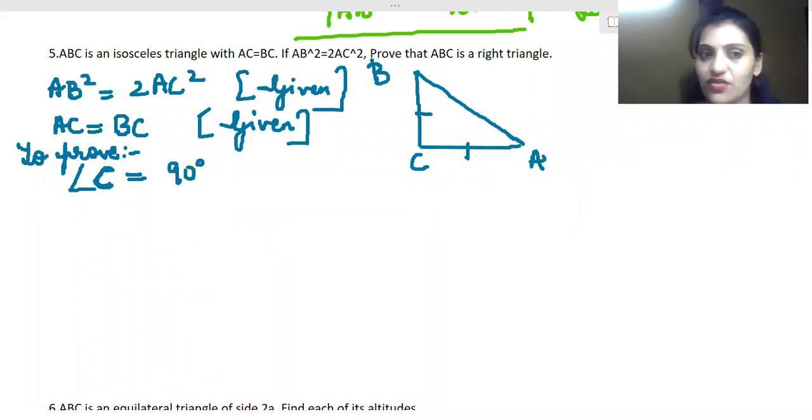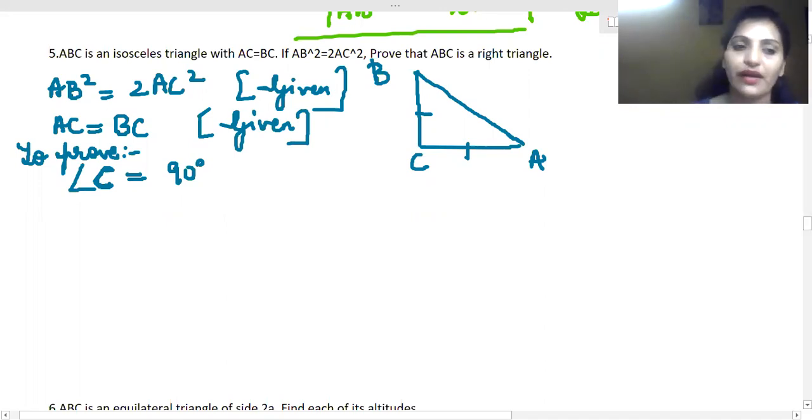ABC is an isosceles triangle with AC equal to BC. If AB square is equal to twice of AC square, you have to prove that it is a right triangle. So what does the right triangle mean? We have to prove that angle C is 90 degrees.